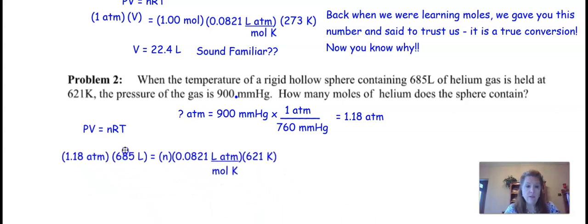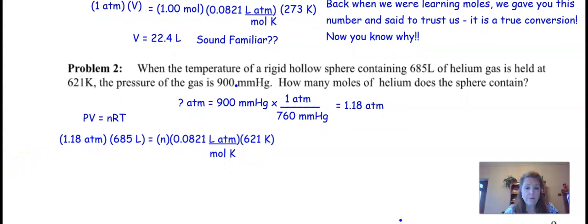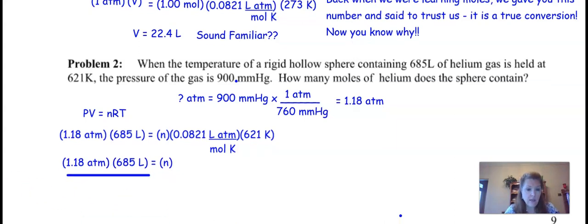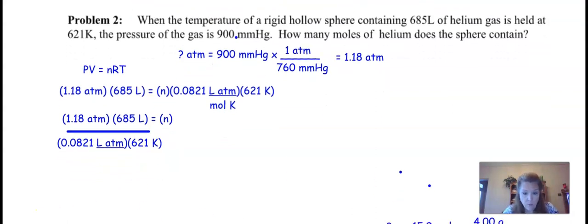So I have, here we go. Here's my pressure. The one I just found was 1.18 atm. Notice it's 685 liters. I don't have to do anything with that. I just plug it in. Equals N. Here's my R. Here's my T. So how do you solve for N? I'm going to divide both sides by RT. So here is my R and my T. I lost something. Hang on. Lost my unit. That's an important unit.